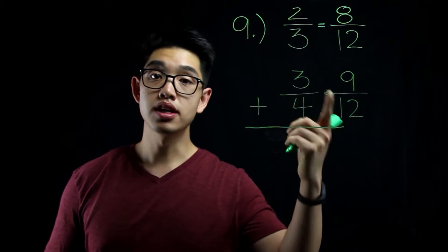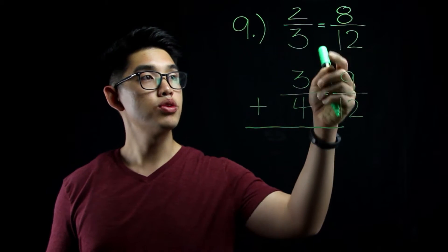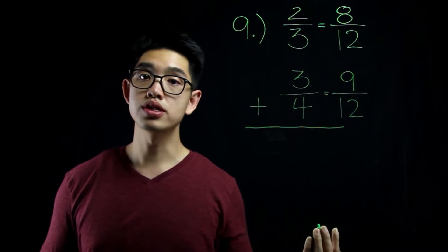Since these two fractions have the same denominator, I can then add the numerators. 8 plus 9 equals to 17.